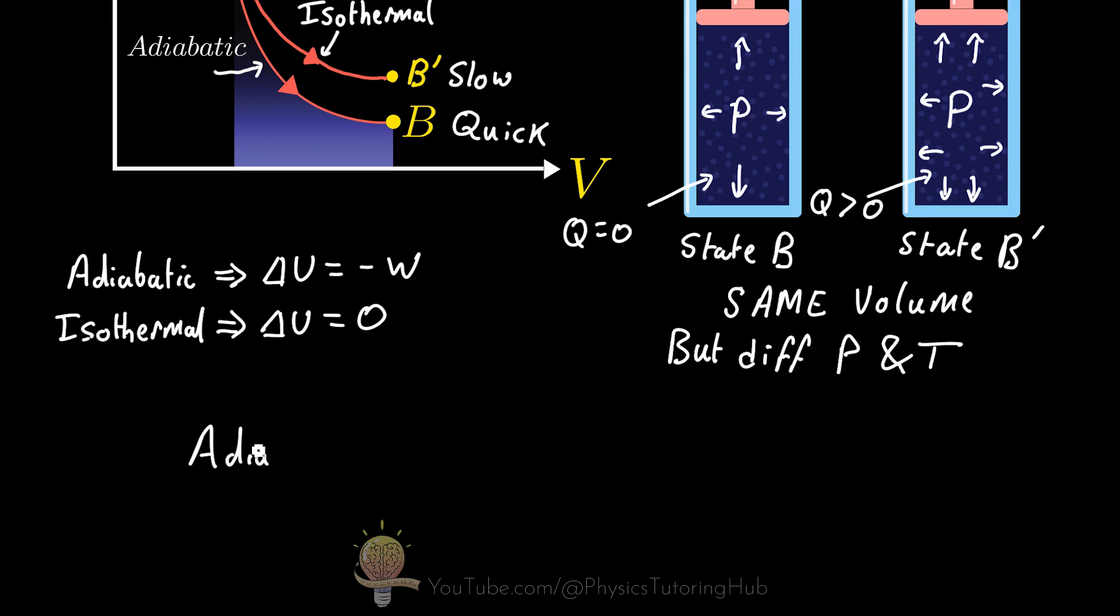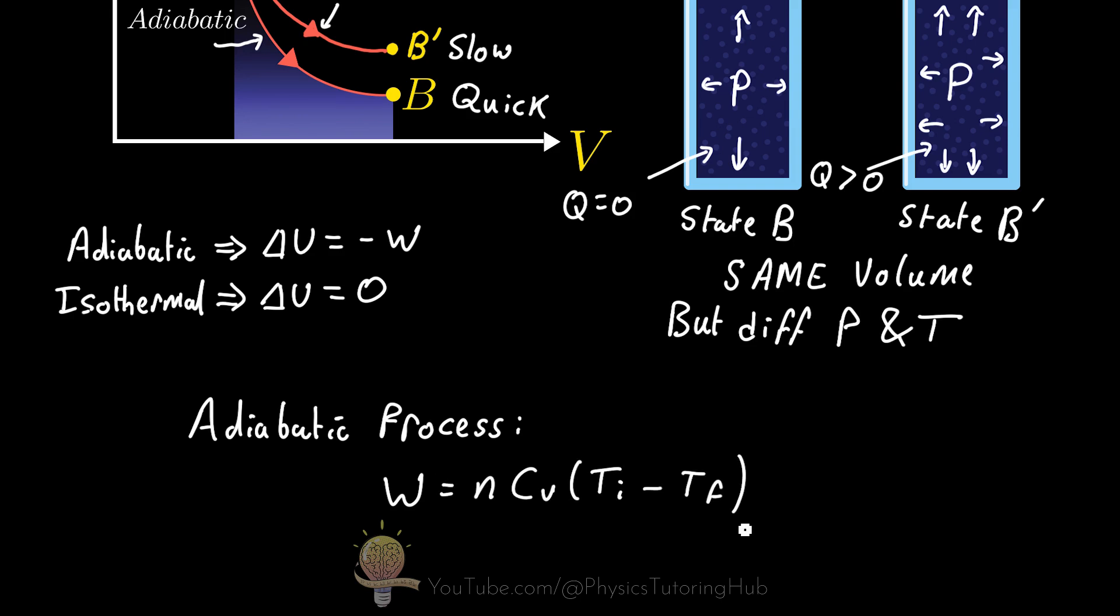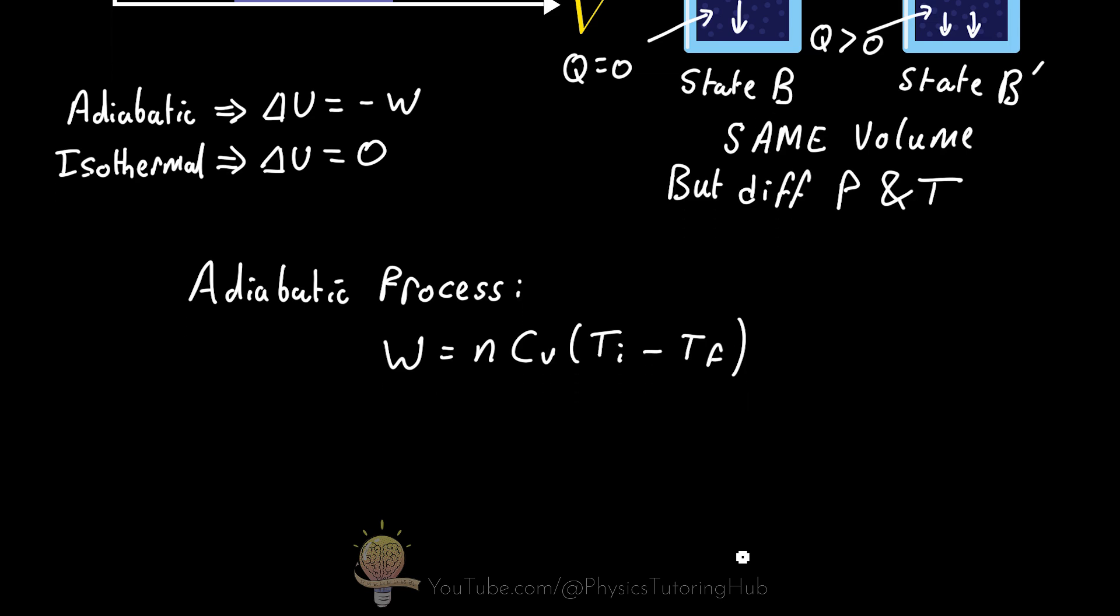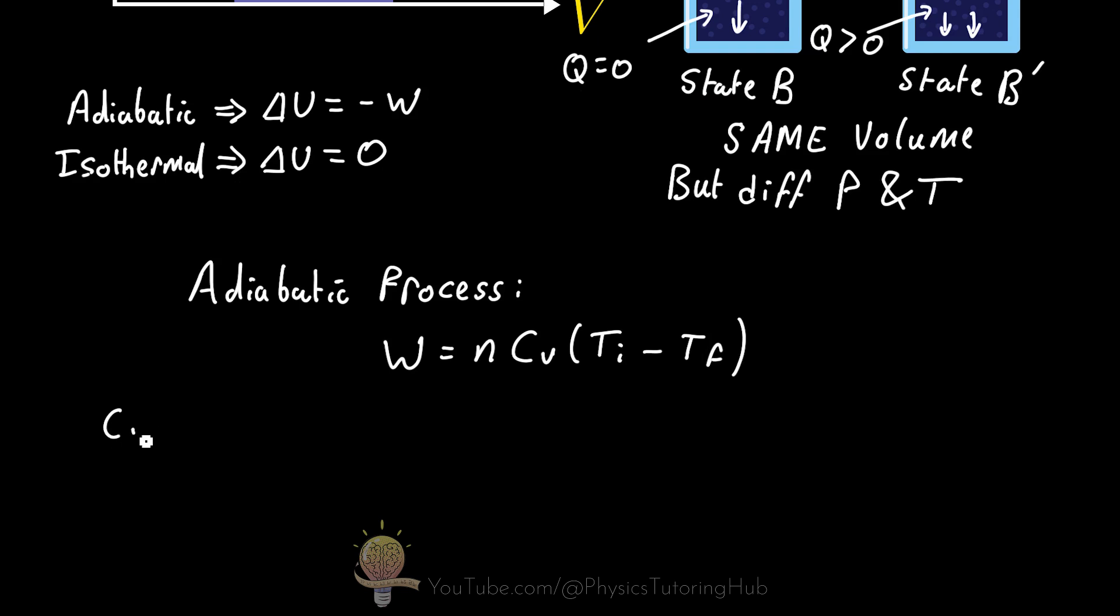If we wanted to calculate the work done under an adiabatic curve we can use this equation, where Ti is the absolute temperature before the process starts and Tf is the absolute temperature after the process has finished. And n represents the number of moles of gas in our closed system, and C sub v is the molar heat capacity at constant volume.